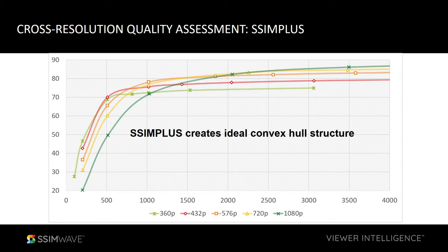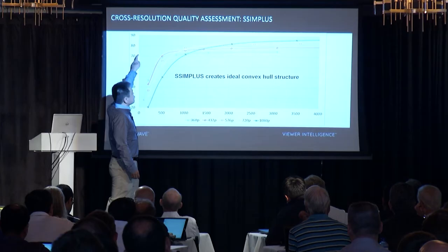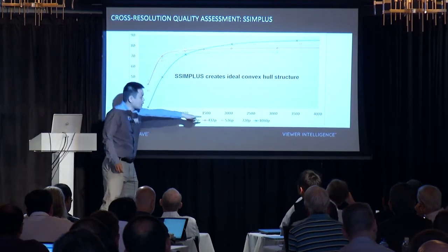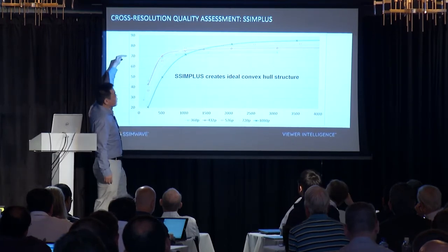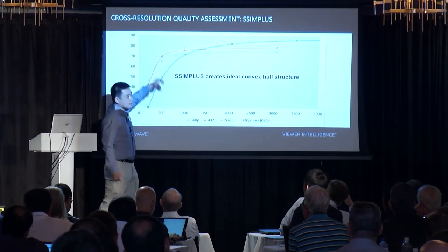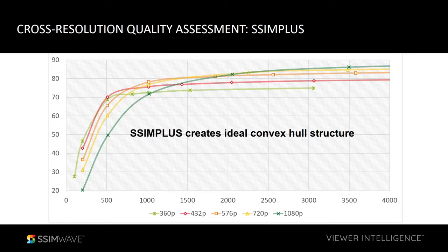Simplus gives you the convex hull structure, meaning that if you're targeting a quality of, say, 80 or 85 or above, you should use really high resolution. As you drop the target quality a little bit, you switch to another resolution, then another. Not only do you get the right resolution, but also the bitrate — because you hit that curve, you know exactly what bitrate to use to meet the target quality level. That's the advantage of Simplus.